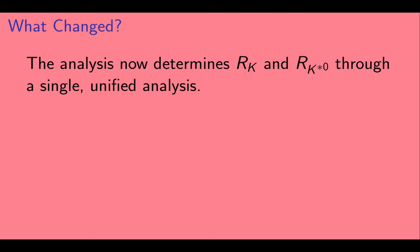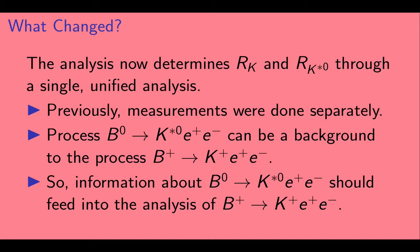And for the last small change that we're going to look at, they now determine RK and RK star through a single unified analysis. Before, they were done separately. But it turns out that one of the processes we're interested in, where a neutral B decays to a K star and an E plus E minus pair, can be a background to another process that we're interested in, where the charged B decays to a K plus and an E plus E minus pair. So it's a good idea to have the two results emerge from the same analysis. OK. With that, let's talk about the one big change.